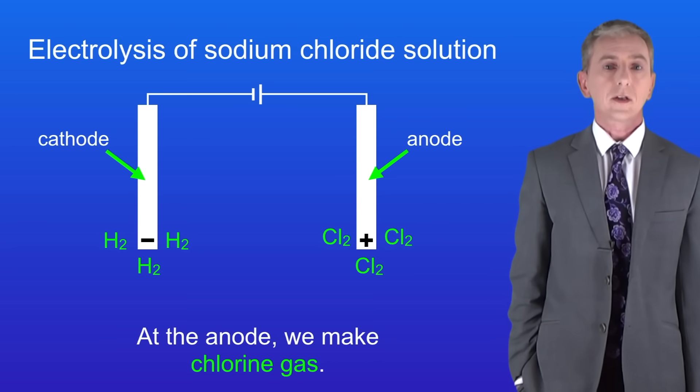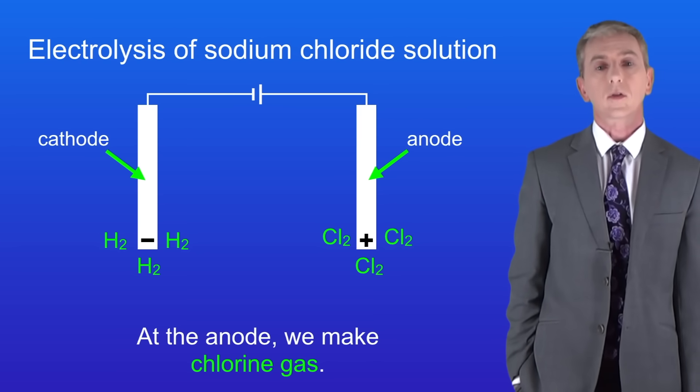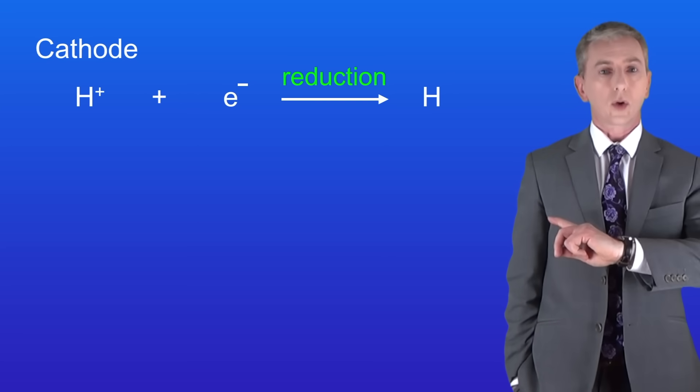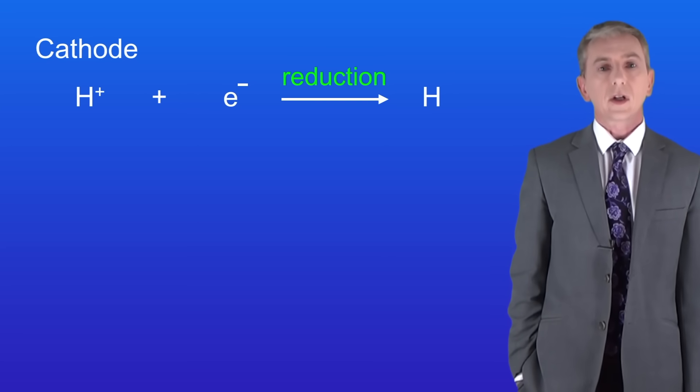If you're a higher student then you need to know the half equations for these reactions. Here's the reaction at the cathode. You can see the hydrogen ion is gaining one electron to form a hydrogen atom. That's an example of a reduction reaction.